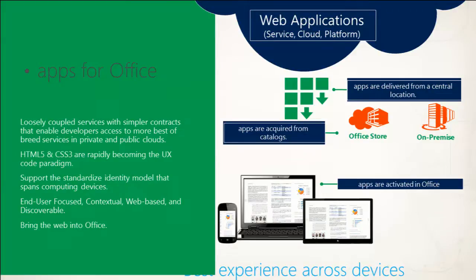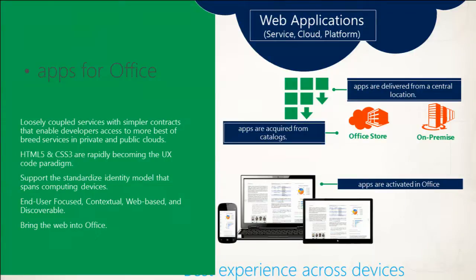Apps for office give you the ability to take loosely coupled services, bring them into office, and have them interact with documents that are hosted by the office runtime. Those applications can be built using HTML, JavaScript, and CSS3. You can use whatever interaction technology you choose — primarily people are using JavaScript, but if you wanted to use server-side technology you could use ASP.NET, Ruby on Rails. There's also an example where I just use Node.js to build it. That really frees you to choose exactly what technology you want that's going to best accelerate delivery of the solution you're building.